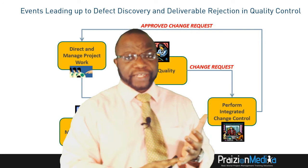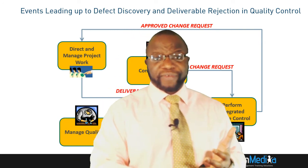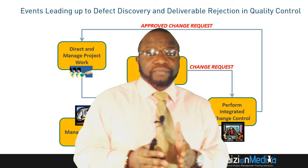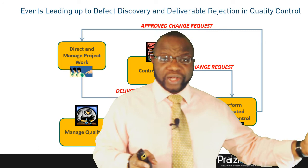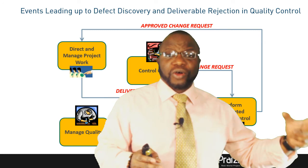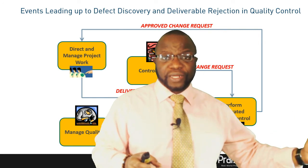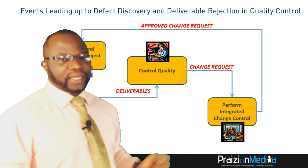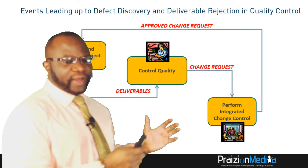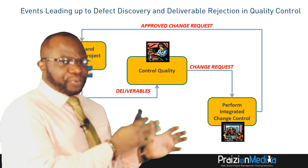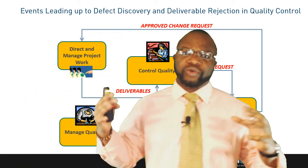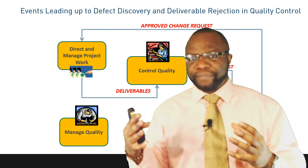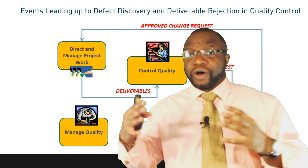It's very important that you realize in Direct and Manage Project Work, there are three possibilities of what this change request could be: it could be corrective action, it could be preventive action, or it could be defect repair. Other dimensions of the project could also have updates raised in an approved change request. So when you look at these processes, it is important to view them as an interconnected web of events.